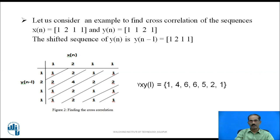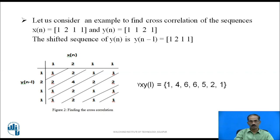Write x[n] in the first row and the time-reversed y[n - l] in the column. Multiply the first element in the column with all row elements: {1, 2, 1, 1}. The second element in the column gives: {2, 4, 2, 2}. The third element gives: {1, 2, 1, 1}. The last element gives: {1, 2, 1, 1}. Group and sum the diagonal elements as shown in the diagram to get the cross-correlation.